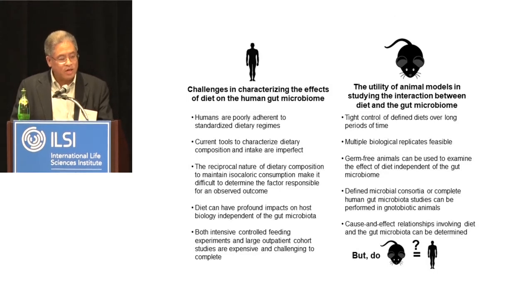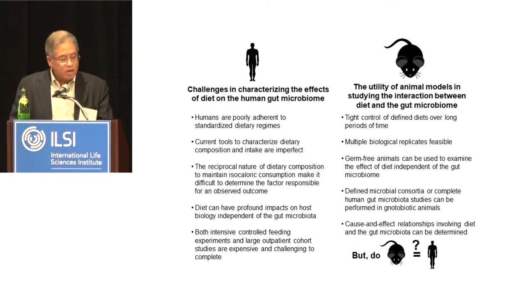Animal models offer tight control of defined diets over a long period of time. Multiple biological replicates are feasible. Germ-free animals can be used to examine the effect of diet independent of the gut microbiome. Defined microbial consortia or complete human gut microbiota studies can be performed in gnotobiotic mice. And most importantly, you can determine cause-and-effect relationships involving diet and the gut microbiome.